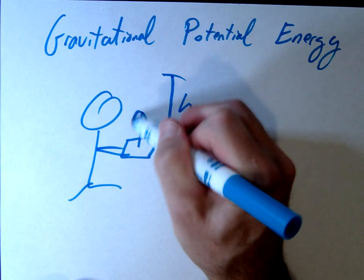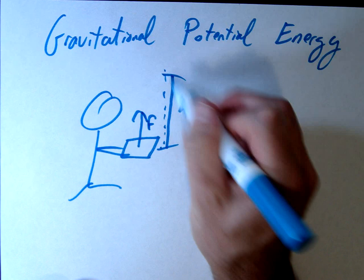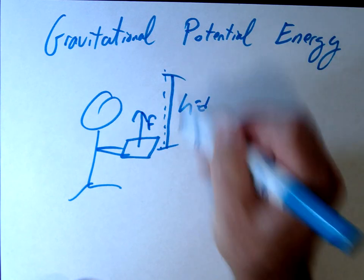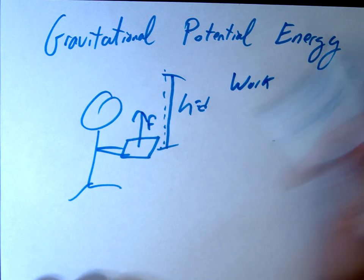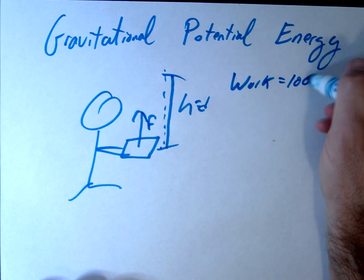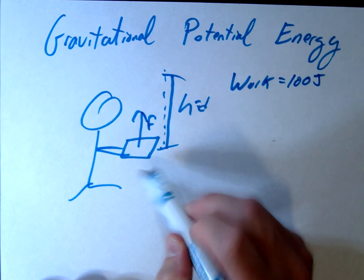In other words, I'm going to apply a force on the book. I'm going to lift it up a distance H. In other words, I'm doing work, right? So let's imagine that I did 100 joules of work on this object, on this book.